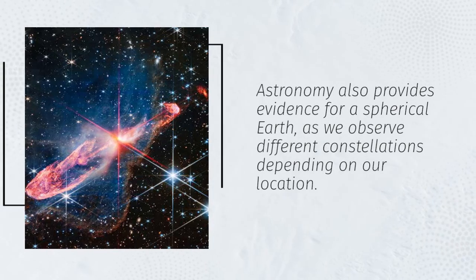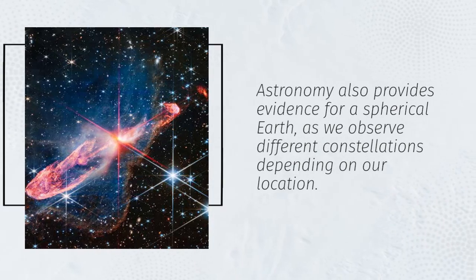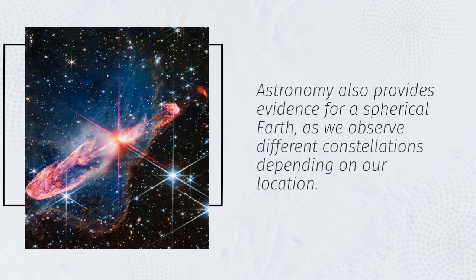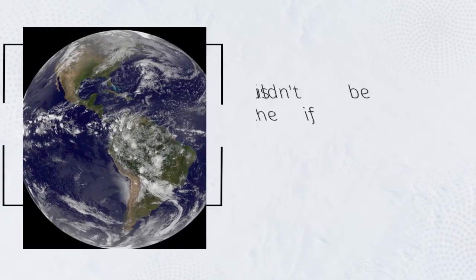Astronomy also provides evidence for a spherical Earth, as we observe different constellations depending on our location. This wouldn't be possible if the Earth were flat. Our view of the celestial sphere would be consistent.